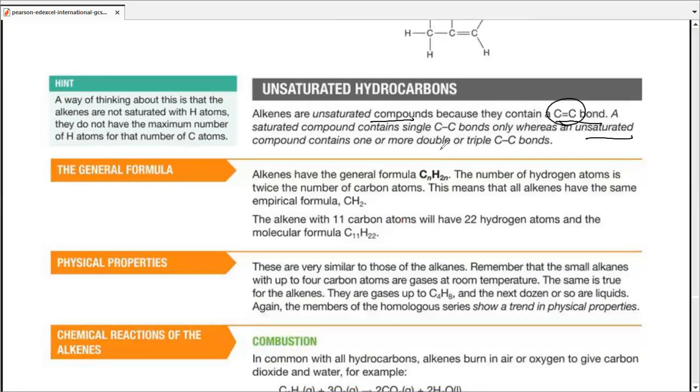Compounds may contain more than one double or triple bonds. A way of thinking about this is that the alkenes are not saturated with hydrogen atoms. They do not have maximum number of hydrogen atoms for the number of carbon atoms, hence the difference in general formula. As you understand, the general formula for alkanes was CnH2n+2, so it actually has a higher number of hydrogen atoms as compared to alkenes, whose general formula is simply CnH2n.